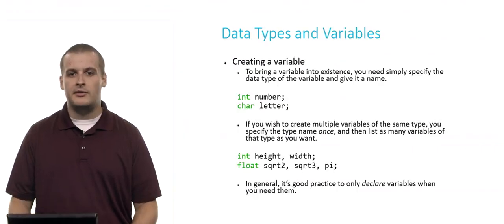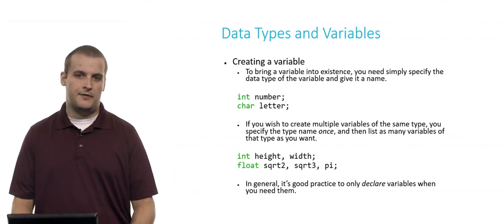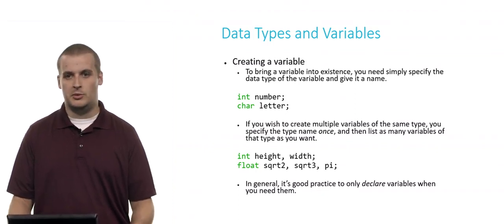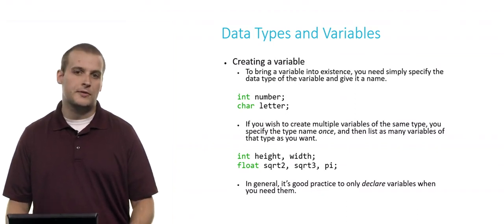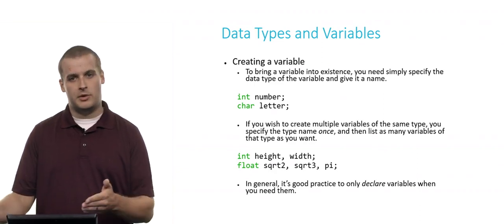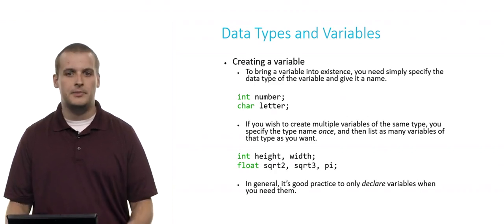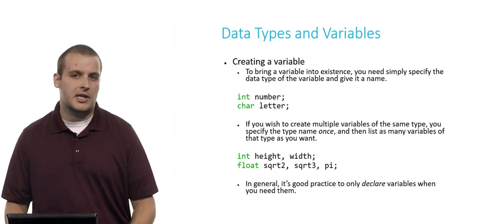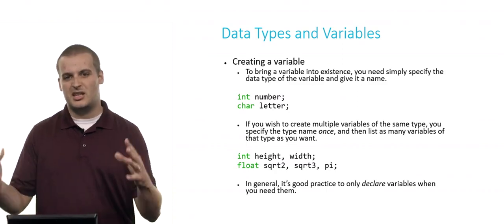Similarly here, I can create three floating point values at once. I can maybe create a variable called square root of 2, which presumably will eventually hold the floating point representation of the square root of 2, square root of 3, and pi. I could have done this on three separate lines, float square root 2 semicolon, float square root 3 semicolon, float pi semicolon, and that would work too. But again, I can just consolidate this into a single line of code. It makes things a little bit shorter, not as clunky.